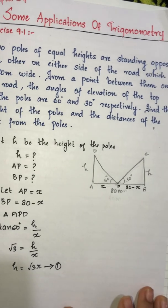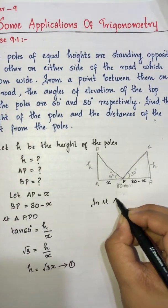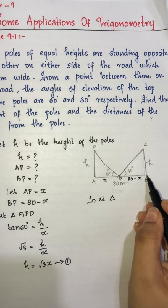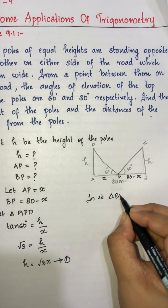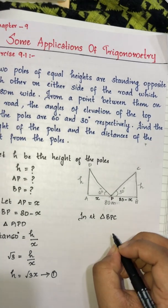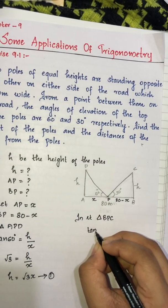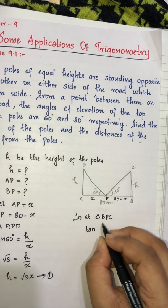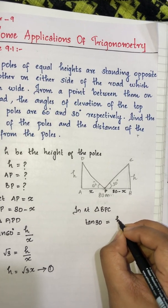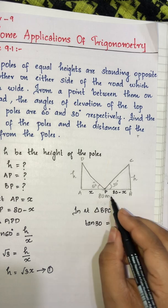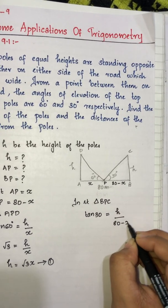Now let us consider the next right triangle BPC. tan 30° is equal to the opposite side over adjacent side, which is h divided by 80 minus x.